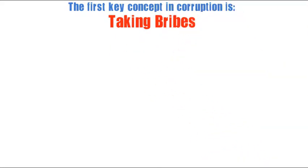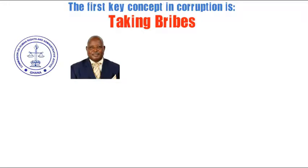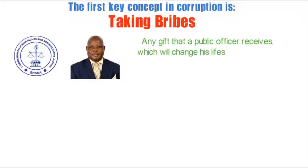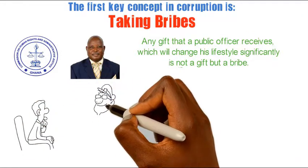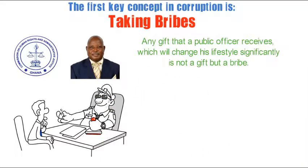The first key concept in corruption is taking bribes. Charles Ayamdu, the Director of the Anti-Corruption Unit of CHRAJ in 2011, stated that any gift that a public officer receives which will change his lifestyle significantly is not a gift but a bribe. This means that if a civil servant accepts promises or gifts in exchange for acts or omissions contrary to his duties, he is guilty of taking a bribe.